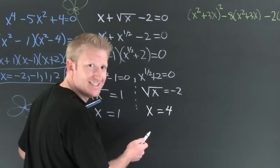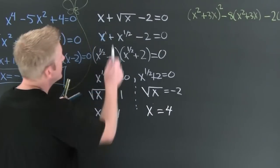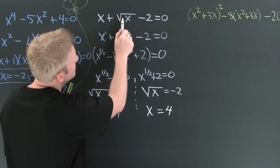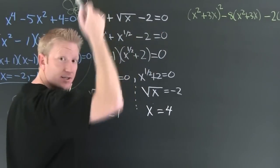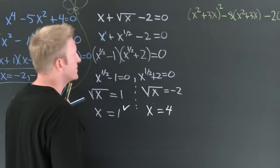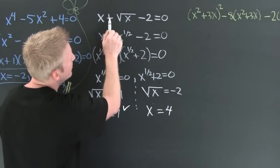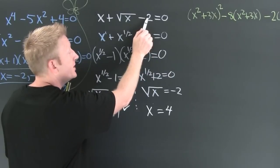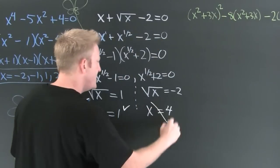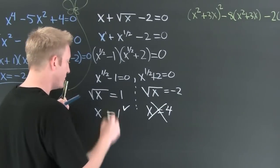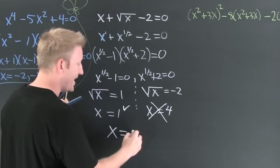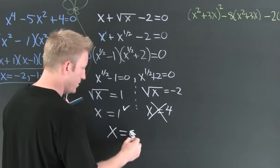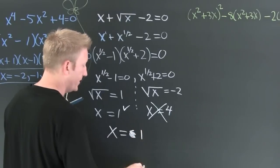But now I need to check it. I plug 1 in there: 1 plus 1 minus 2, is that none? Yes, you are a solution. Now here, 4 plus 2 minus 2 is 4, that's not zero. You are not a solution. So here I only have one solution, x is gonna be 1.